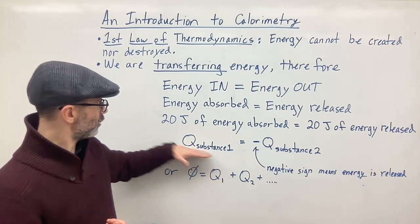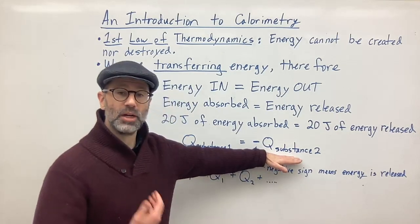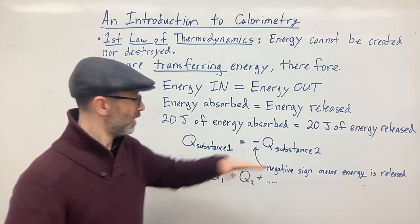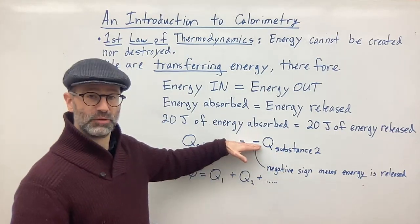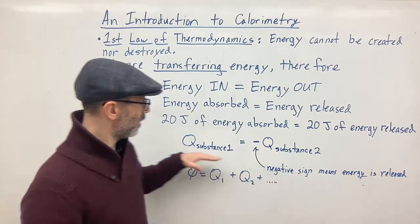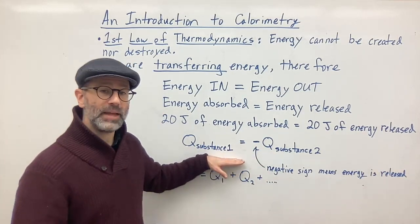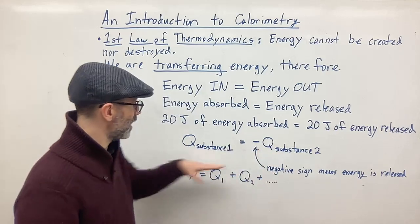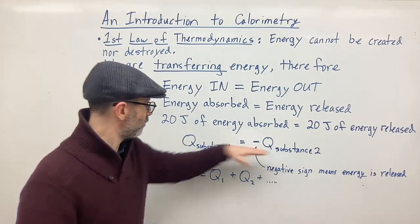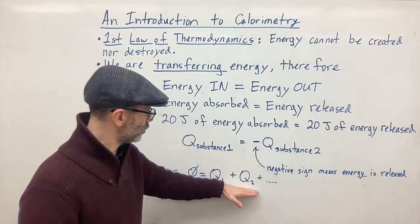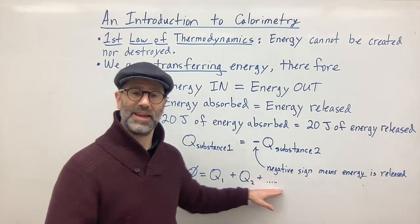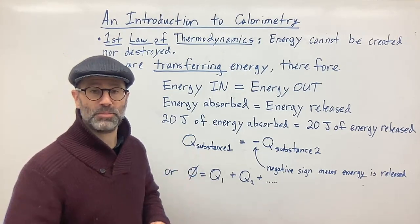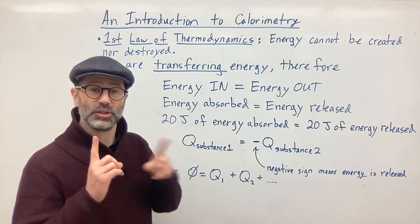The energy absorbed by one substance is positive because it's being gained. That 20 joules is equal to the energy lost by the other substance — negative means the loss or release of energy. One substance is losing energy so it's negative; the other is gaining so it's positive. Another way to rewrite this is: zero equals Q1 plus Q2, and if there are more substances, plus Q3 plus Q4. When you add all the Q values together, they should cancel out and give you zero, confirming no energy is lost.